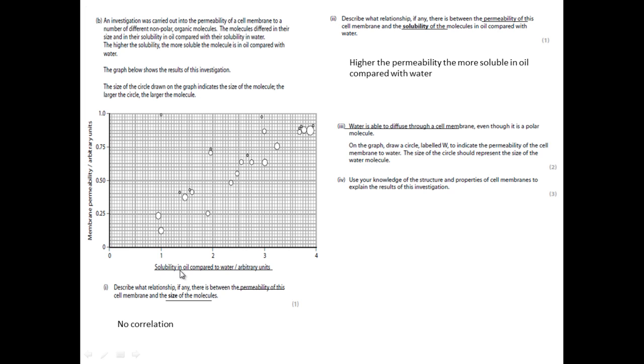So therefore its solubility in oil compared with water must be quite low. You draw the circle anywhere in the top left, so somewhere like that. The important thing here is that the size of the circle should represent the size of the water molecule. This is slightly too large, the circle that I have drawn. It should be less than one square because water is a very, very small molecule and hence why it should be exceptionally small. What they give the mark for on the test paper is it must be smaller than a single square.